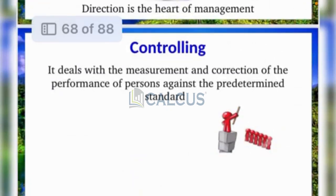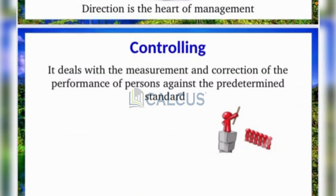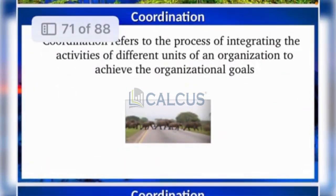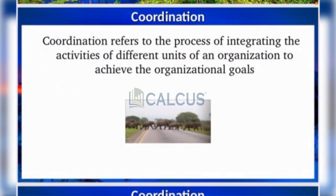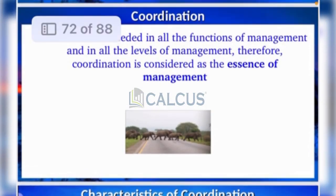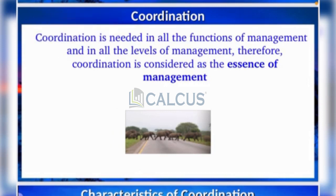So, how do you learn planning, organizing, staffing, directing, and controlling? The last and most important element is coordination. Coordination is the essence of management — it integrates all activities and processes. Coordination is needed in all functions of management and at all levels of management. Therefore, coordination is called the essence of management.